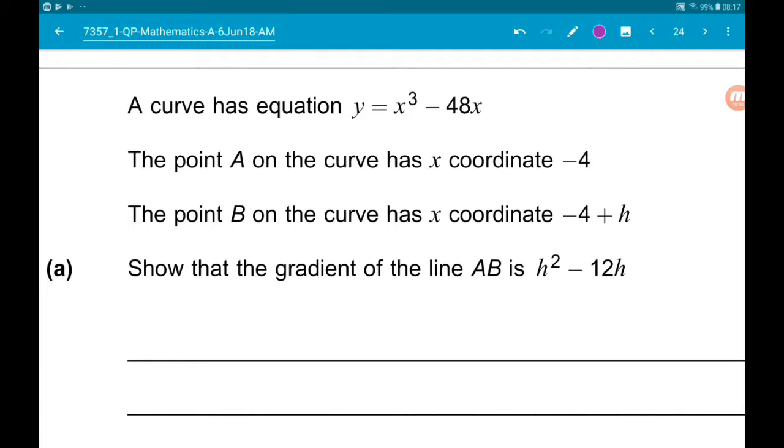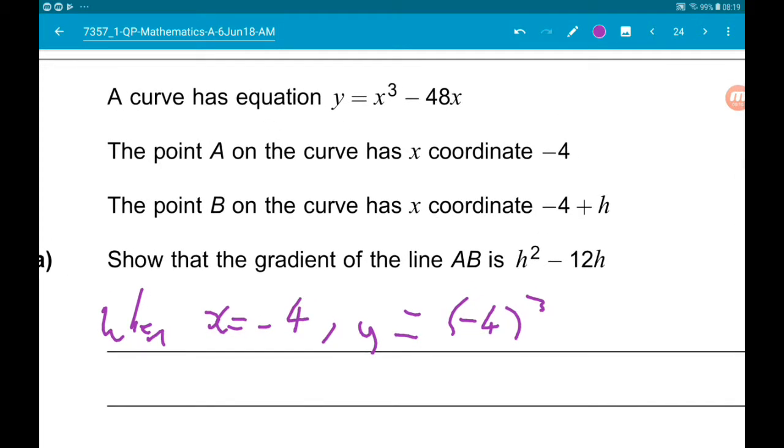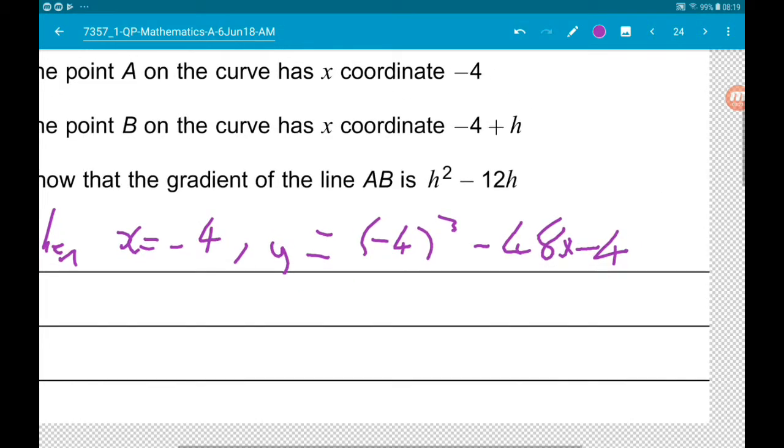So gradient is difference in y over difference in x. We need to find the y coordinates for each x coordinate. When x is minus 4, y is going to be minus 4 cubed minus 48 times minus 4. Minus 4 cubed is minus 64.